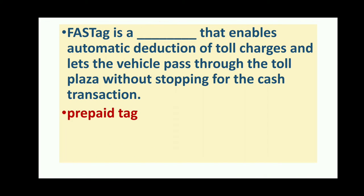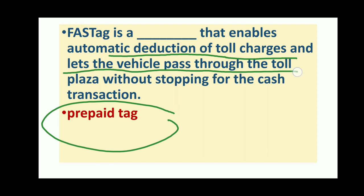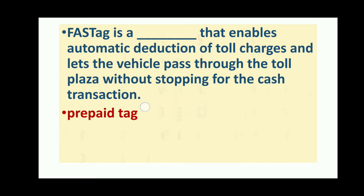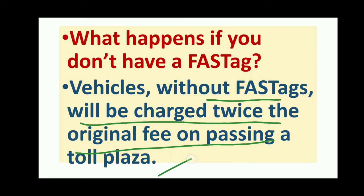FASTag is a prepaid tag that enables automatic deduction of toll charges and lets the vehicle pass through the toll plaza without stopping for cash transactions. What happens if you don't have a FASTag? Vehicles without FASTag will be charged twice the original fee on passing a toll plaza.